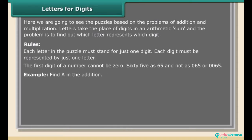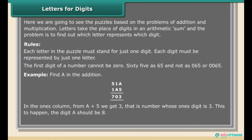Example: Find A in the addition 51A + 1A5 = 703. In the ones column, A + 5 gives a result whose ones digit is 3. For this to happen, the digit A should be 8.